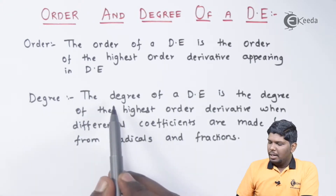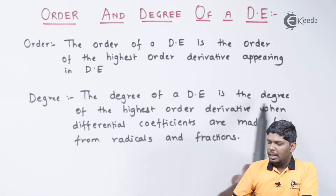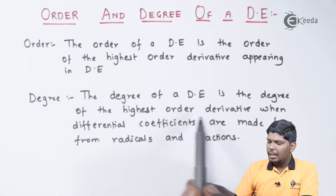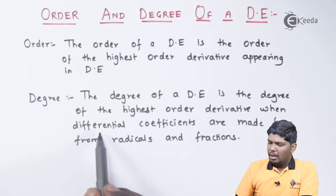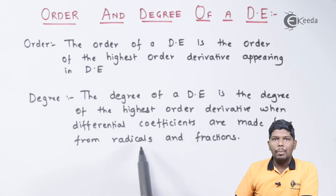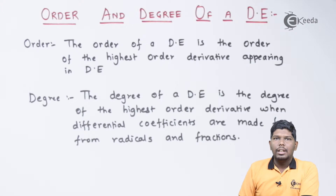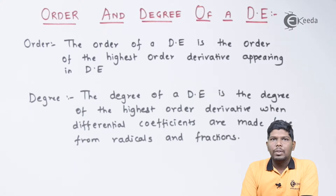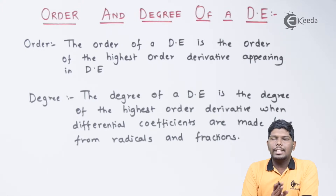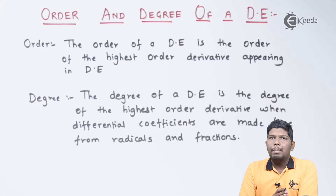The degree of a differential equation is the degree of the highest order derivative, when differential coefficients are made free from radicals and fractions. After finding the highest order derivative, its power is called the degree of the differential equation. But to find the degree, we must make sure that all the powers are free from radicals as well as fractions.